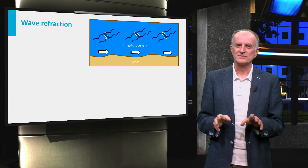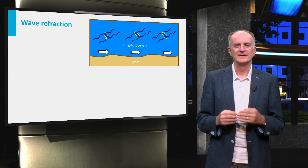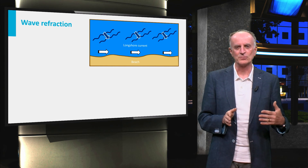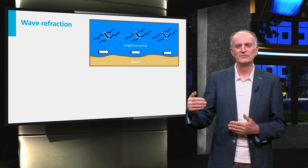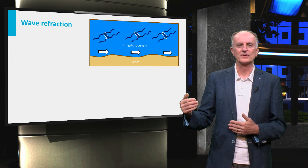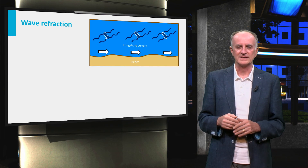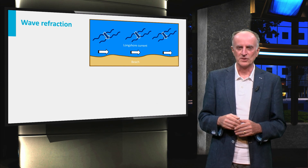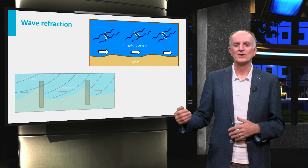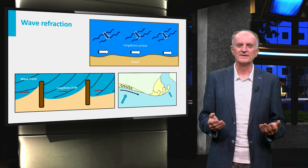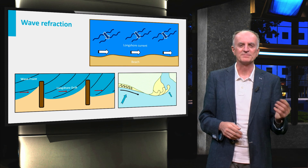Winds and waves do not always move perpendicular to the coast and are often oblique to it. In this case, waves hitting the coast are deflected, giving rise to a component of movement parallel to the coast itself. These are called alongshore currents, which can erode, transport, or deposit sand along the coast. Walking along the coast, you see typical effects of alongshore currents, such as coastal groins and spits.